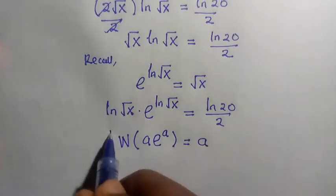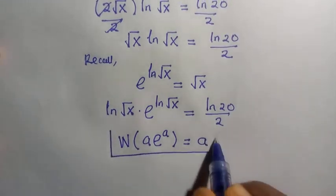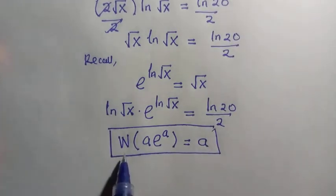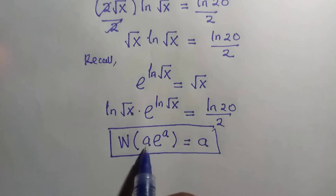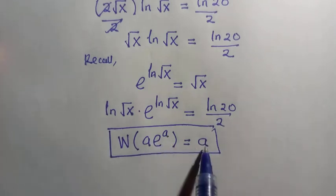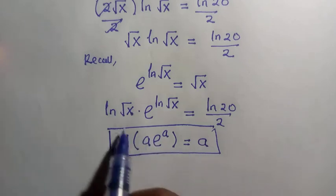So a is the function. We call it Lambert W function. That is, when these coefficients and the power of exponents are the same, then we take just the coefficients, or let's say we just take the power of exponents, which is a.